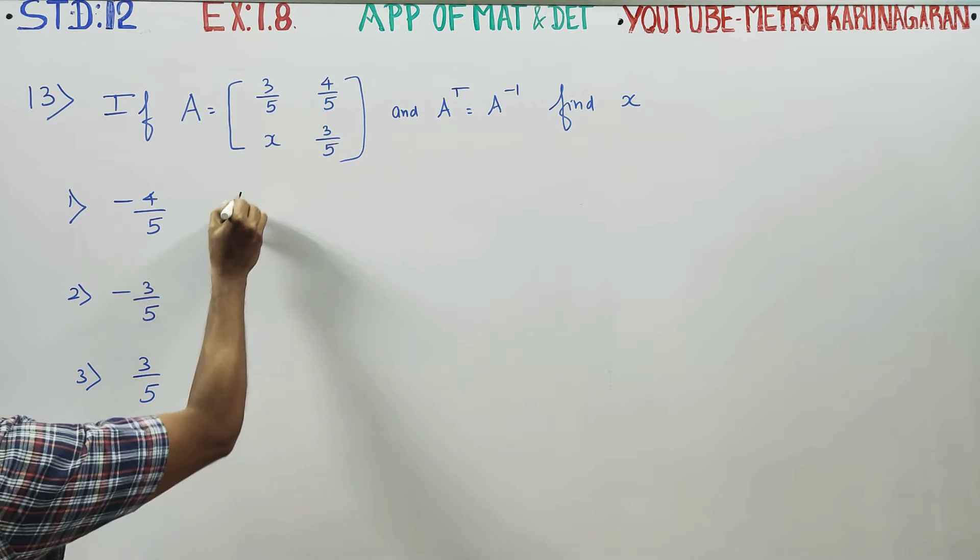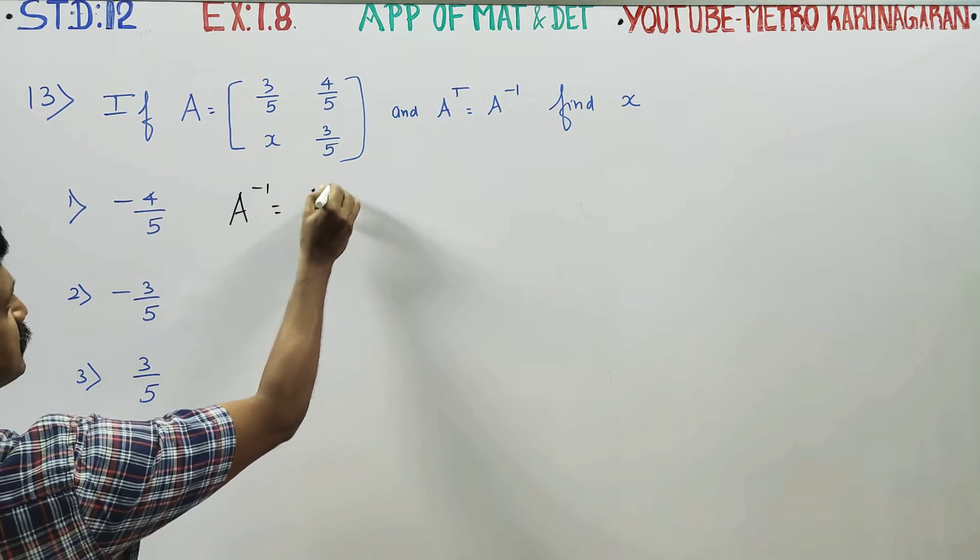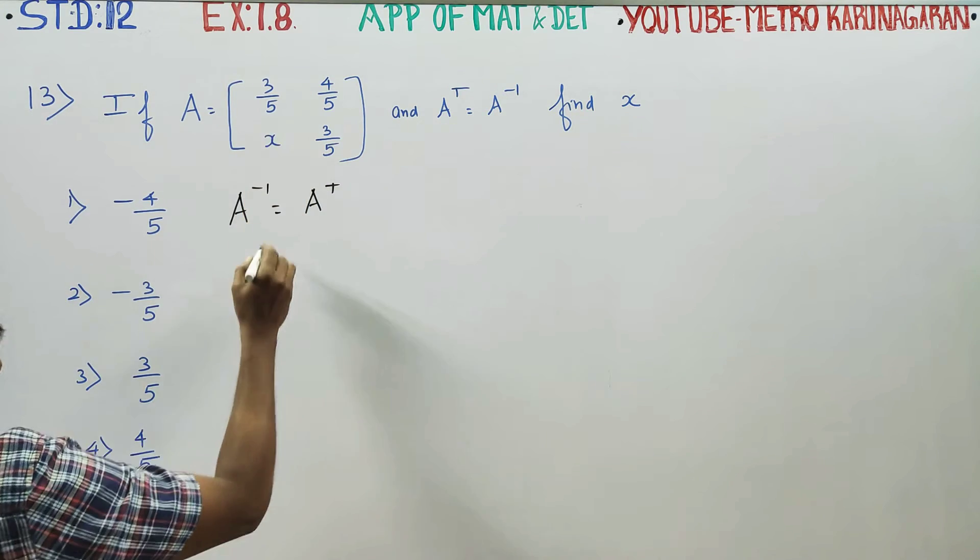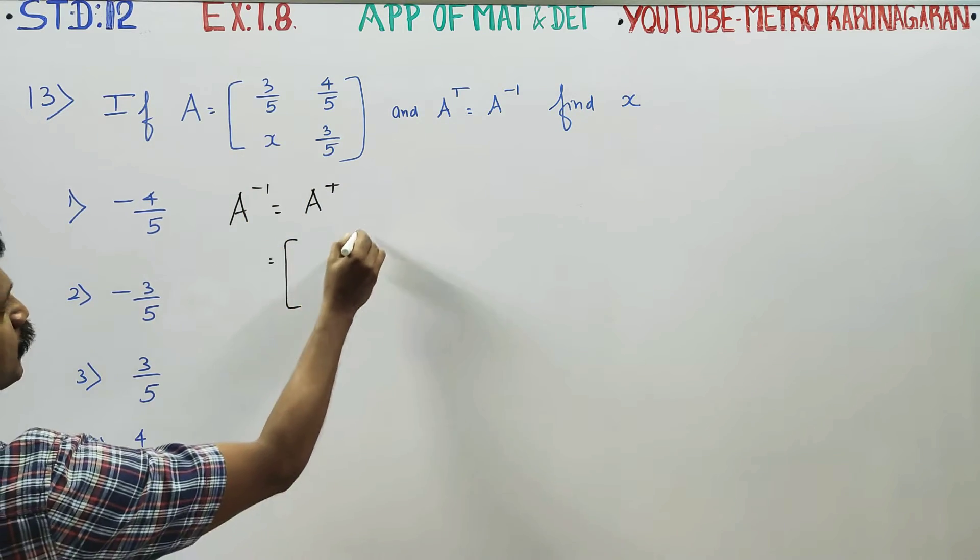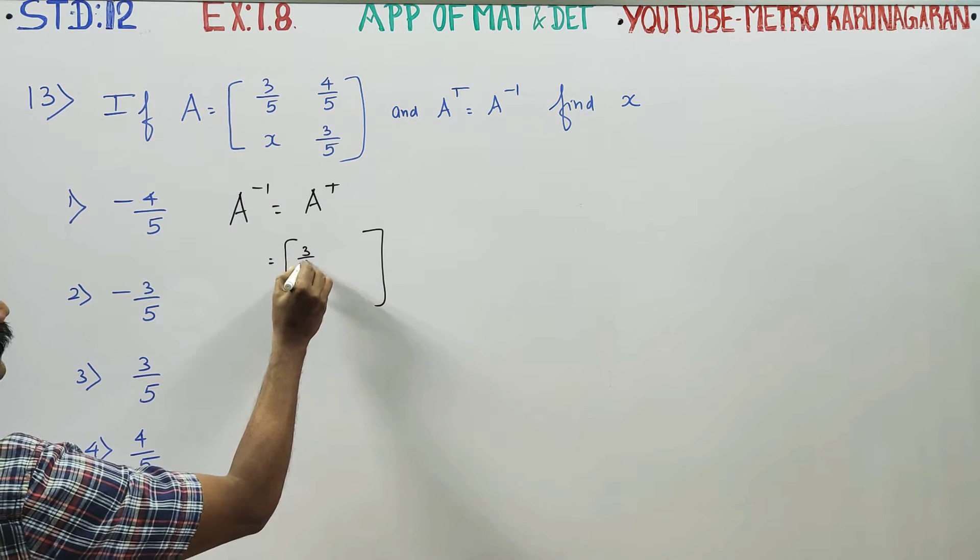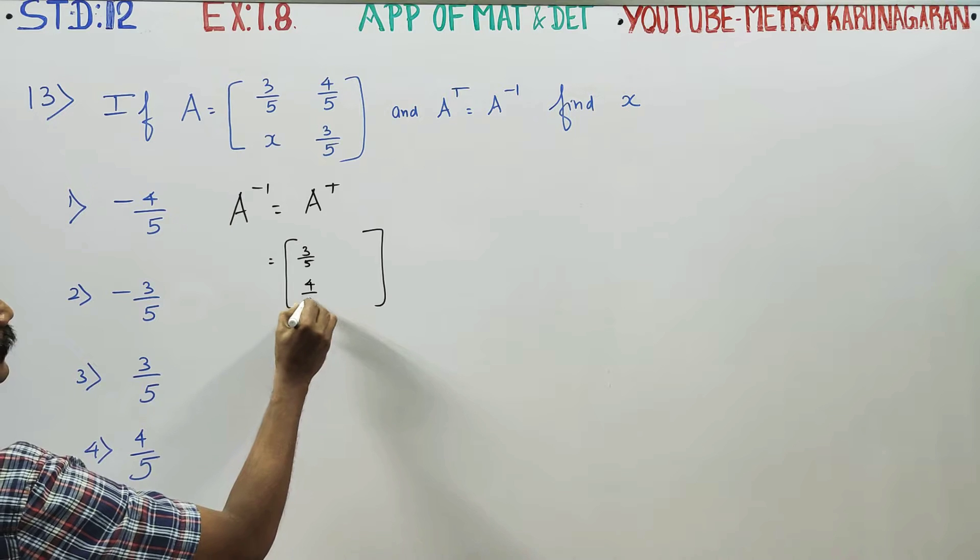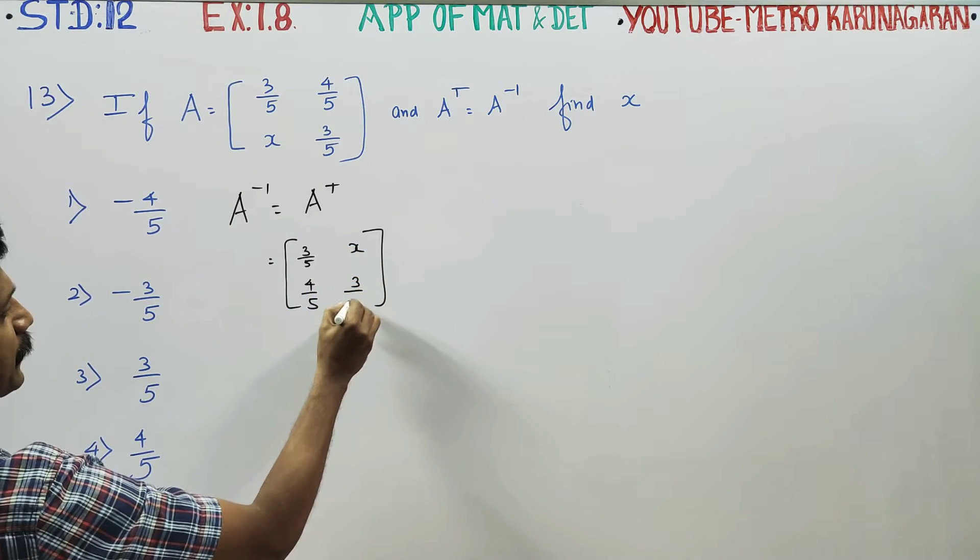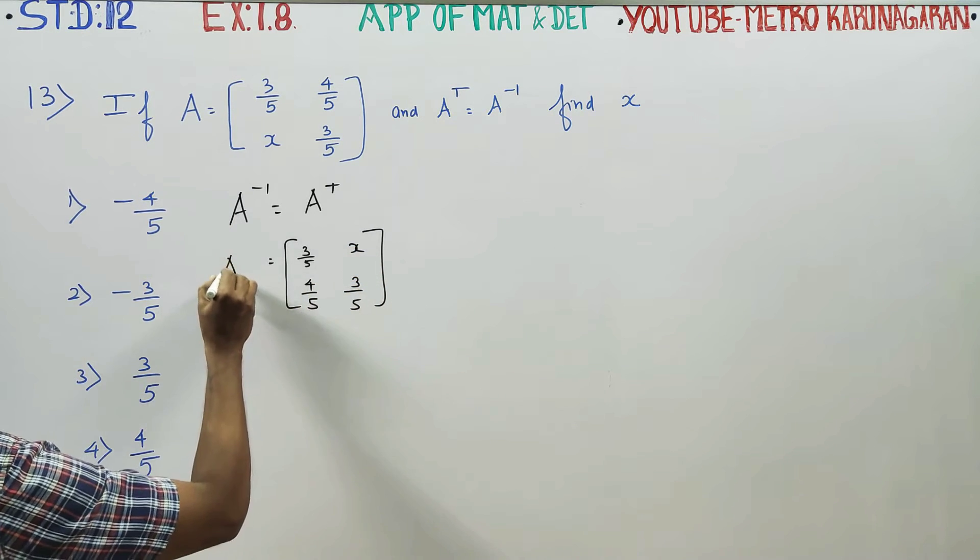First I will find A inverse. A inverse means it is A transpose, just you have to find the transpose of this matrix: 3 by 5, 4 by 5, X, 3 by 5. This is my A inverse.